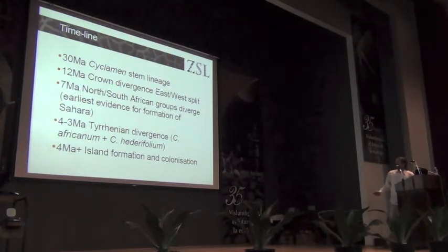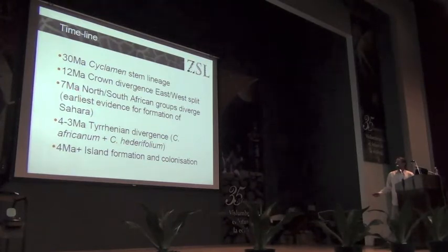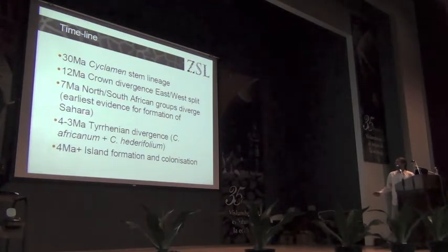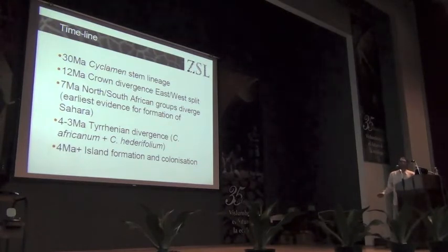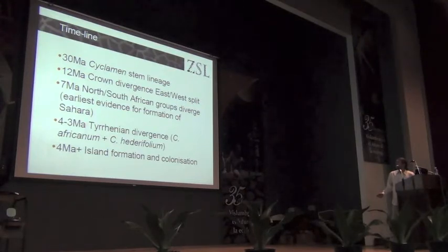We can look at other vicariance events and try to tie those up with paleogeography information. The African groups diverged around 7 million years ago, and that's concurrent with the earliest evidence for Sahara formation, which is a potential geographic barrier between the Somalian species and the others. And here's the Tyrrhenian example that I just gave.